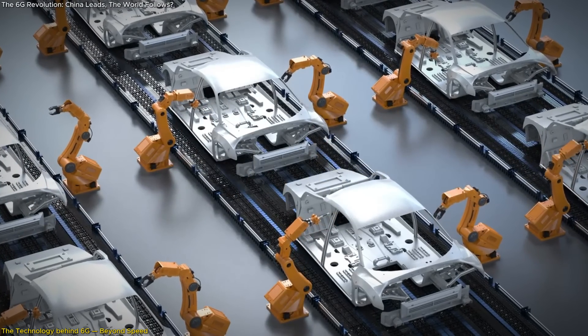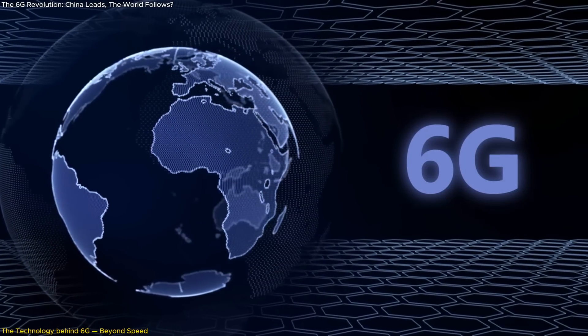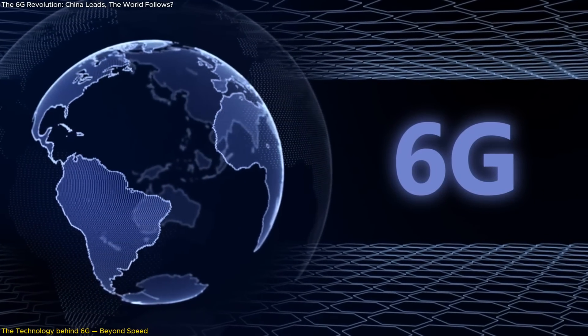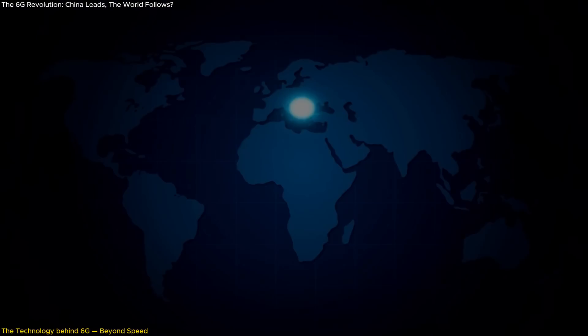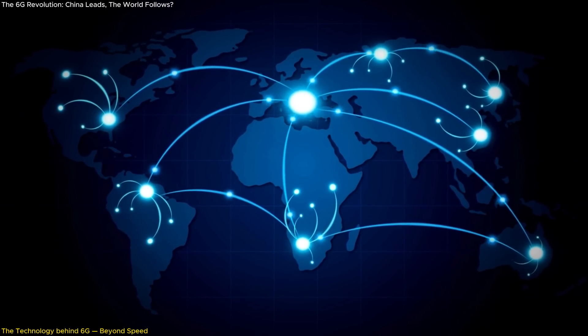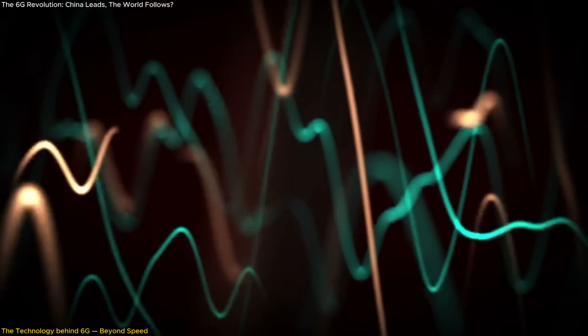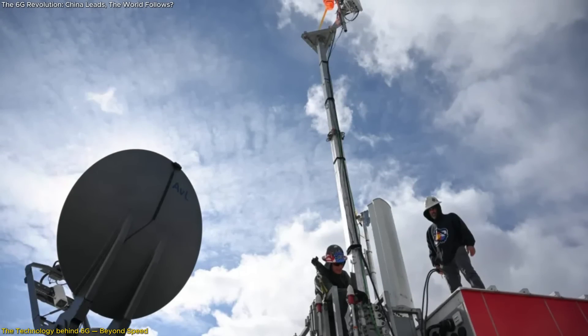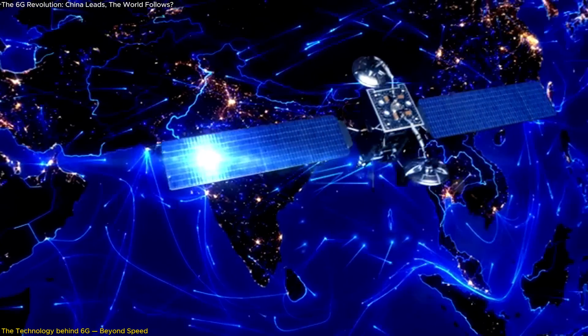What makes this possible? 6G networks will utilize the terahertz frequency spectrum, 100 gigahertz to 3 terahertz. This high-frequency range offers incredible bandwidth but also presents new engineering challenges. Terahertz waves have a short range and can be absorbed by obstacles, meaning we'll need a dense infrastructure of advanced antennas and potentially satellite support to ensure coverage.